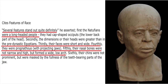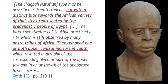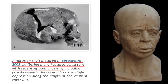Following along with the Natufian phenotype, several features stand out quite definitely: they were a long-headed people of a pre-dynastic Egyptian type; their faces were short and wide; they were prognathous with protruding jaws; their nasal bones were narrow and high but formed a wide, low arch — basically, they had wide noses. This is Keith of 1931, noting a distinct bias towards the African variety represented by the pre-dynastic people of Egypt. A Natufian skull exhibited many features consistent with recent African ancestry — it's a very long skull as described, consistent with the long-headed characterization.